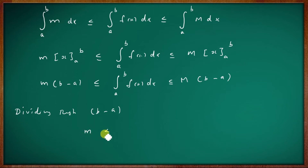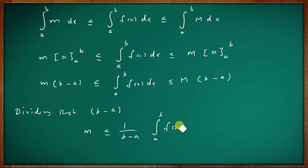This gives: m ≤ (1/(b−a)) ∫ₐᵇ f(x) dx ≤ M.